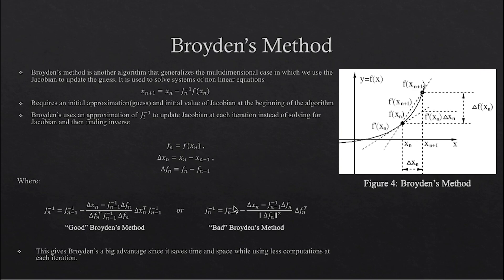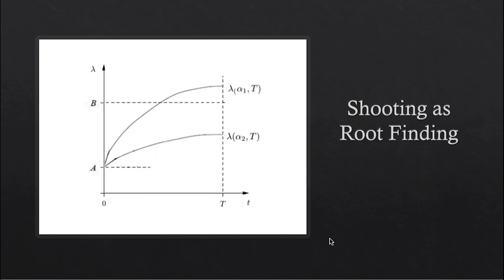The reason bad Broyden's method is called bad is because it tends to have fewer initial points where it actually converges. However, bad Broyden's method tends to converge faster than good Broyden's at the initial points that do converge. So, while good Broyden's tends to be slower, it is more reliable when converging. This is how it gets its name, good Broyden's method. Now, finally, we're going to apply these root-finding methods to implement the shooting method for the two-point boundary value problems.